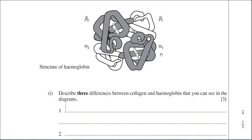Within collagen there are three polypeptide chains, as mentioned, and those polypeptide chains are identical. But in haemoglobin there are four polypeptide chains, of which only two are identical. That's another feature that differs between them. Lastly, haemoglobin is in the quaternary structure because it has four polypeptide chains bonded together, but collagen is in the secondary structure.